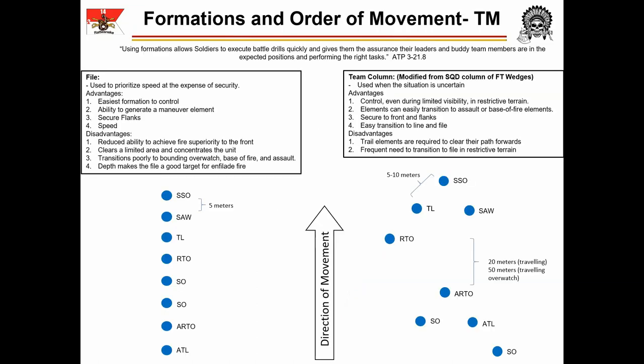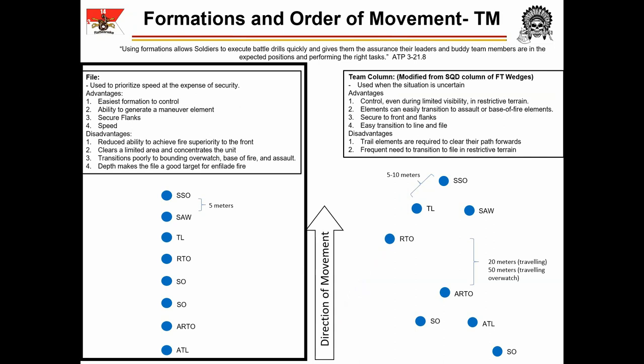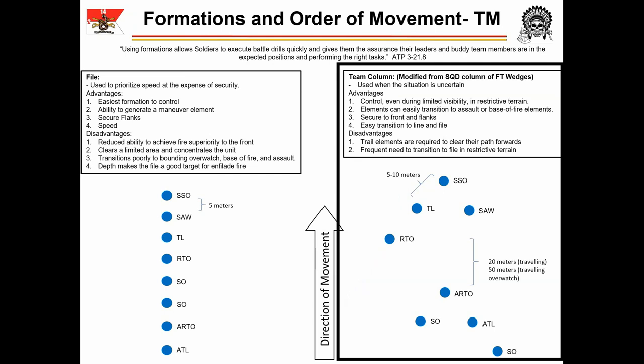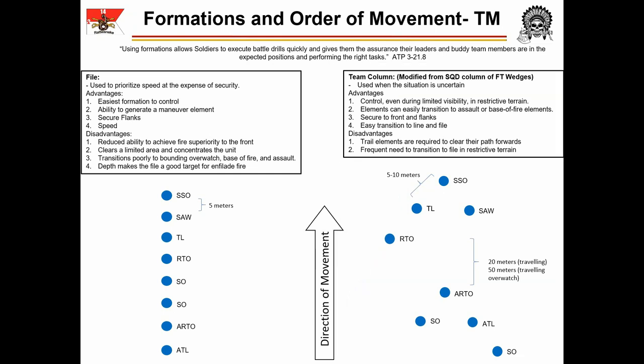First, let me familiarize you with this board. The left side of the board addresses team file. The right side of the board addresses team column. In both cases, the 12 o'clock of the unit is towards the top of the board and they are moving in that direction. Additionally, this board denotes the position of each member of the reconnaissance team in formation, but is not personalized.